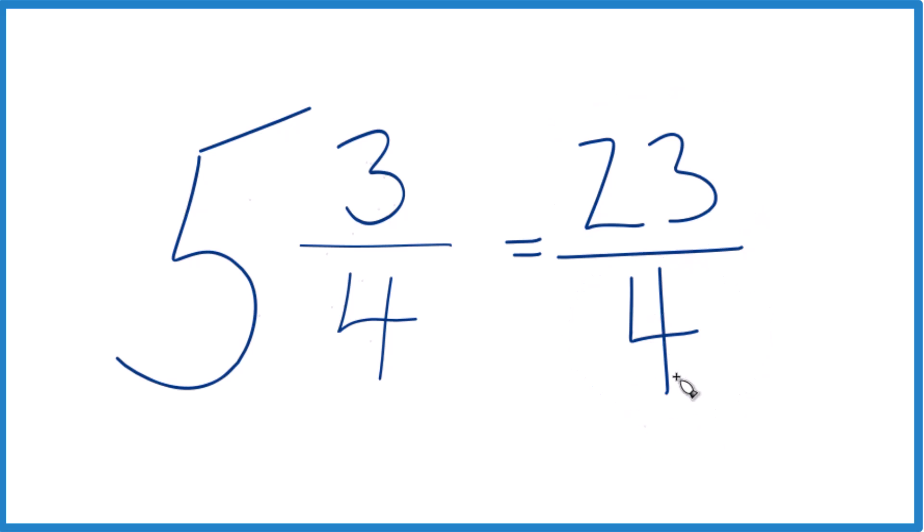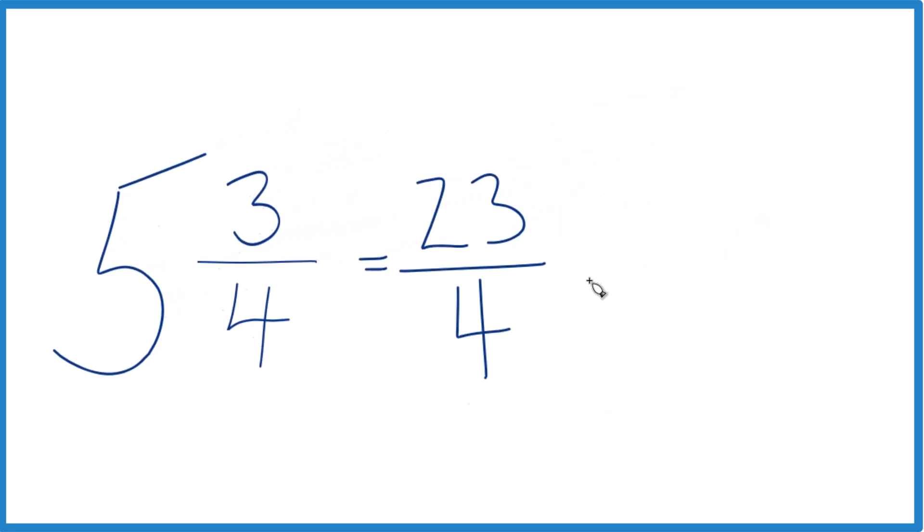Let's check our work. 4 goes into 23, so 4 times 5, that's 20, and then we'd have 3 left over. Bring the 4 across, we get 5 and 3 fourths.